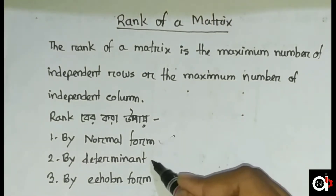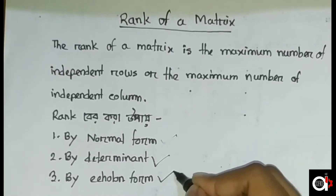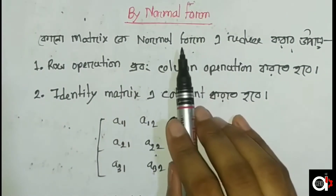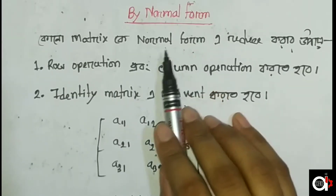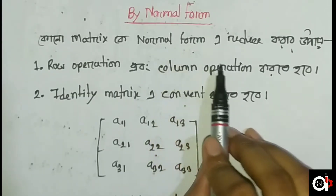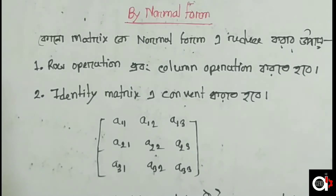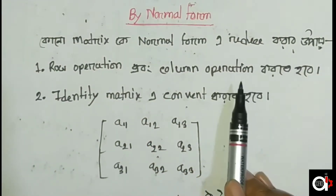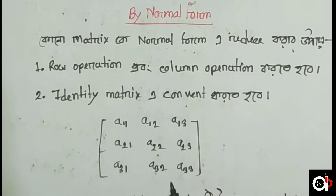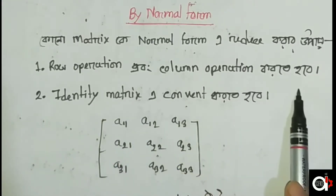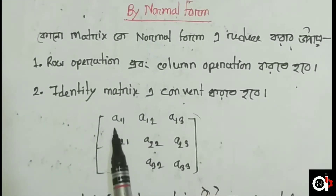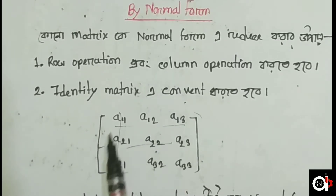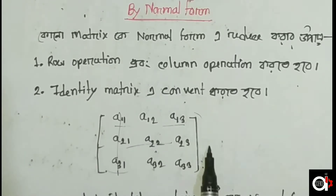The rank can be found by three methods: normal form, determinant, and echelon form. In the case of the normal form, I will find the rank by reducing the matrix. The matrix will be reduced to normal form, which involves rows and columns of the matrix.